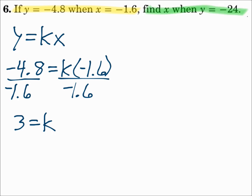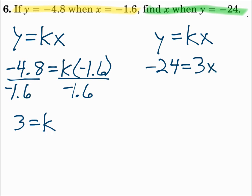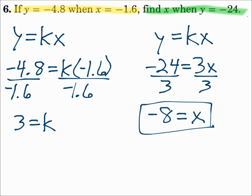Now look at the second half of the question: find x when y equals negative 24. Use y equals kx again. y is negative 24, k is the 3 we just found, times x. Solve for x by dividing both sides by 3, and x is negative 8. Use the first half of the question to find k, and then use that k to answer the second half.